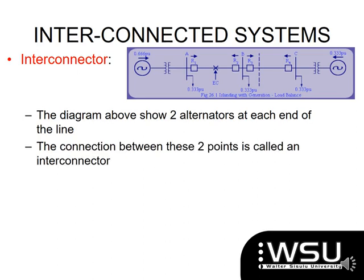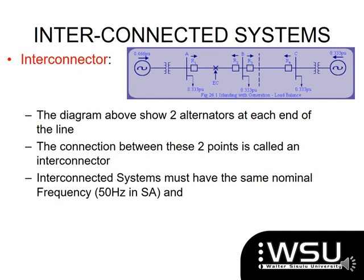The points coming up now explain exactly what I've described. What I want you to be aware of is that in South Africa we utilize 50 Hz as our frequency. Although other places use 60 Hz, that is not our country's standard. Our interconnected system must always run at that nominal frequency of 50 Hz. If it does not, the system becomes unbalanced and we are going to have problems.